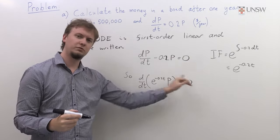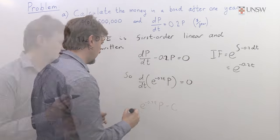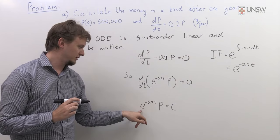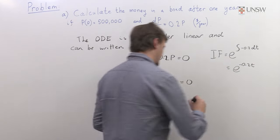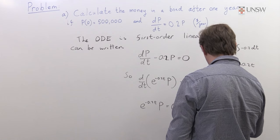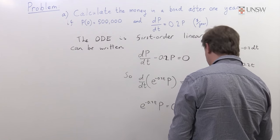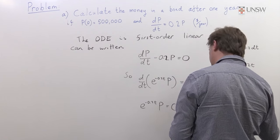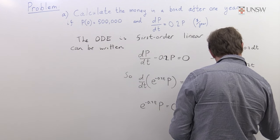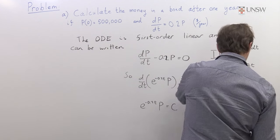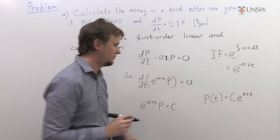That's what our integrating factor gives us, and we can easily integrate both sides of this equation to get the following. Multiplying through by this exponential gives us the full solution that P, the function of time, will be a constant times e to the power of 0.2t.